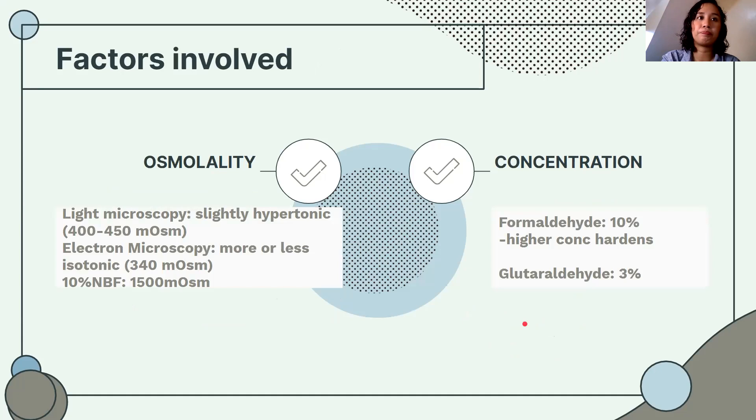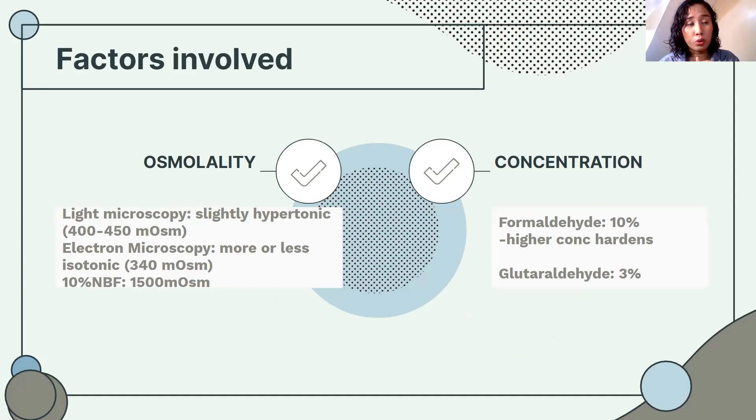Osmolality is important in maintaining the microenvironment of your cells and ensuring that cells are morphologically clear under the microscope. To make sure cells are intact and not ruptured, we must ensure our fixatives have the right osmolality or tonicity.